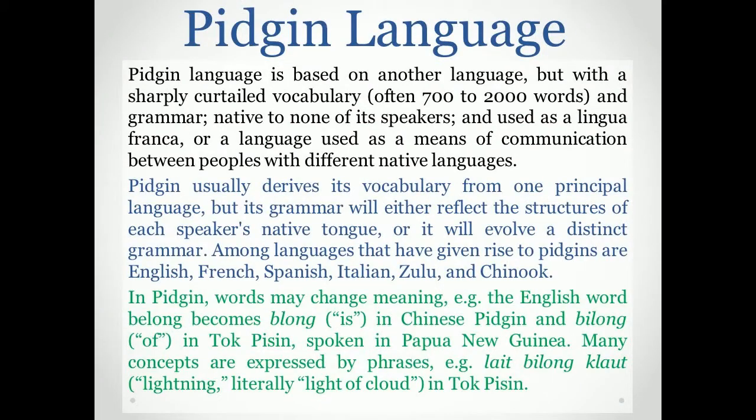A pidgin is a language based on another language but with a sharply curtailed vocabulary — often 700 to 2,000 words — and grammar native to none of its speakers, used as a lingua franca, that is, a means of communication between peoples with different native languages. A pidgin usually derives its vocabulary from one principal language, but its grammar will reflect the structures of each speaker's native tongue, or evolve a distinct grammar. Languages that have given rise to pidgins include English, French, Spanish, Italian, Zulu, and Chinook.